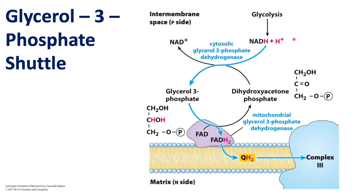The NADH produced by glycolysis cannot pass through the impermeable inner membrane of the mitochondria. NADH is a large molecule, so it is impermeable to the very dense inner membrane of the mitochondria. Therefore, there must be an alternative route for the electrons of NADH to be transported into the ETC cycle.